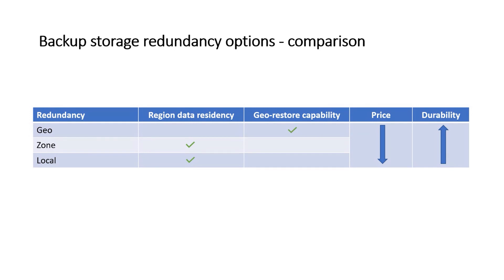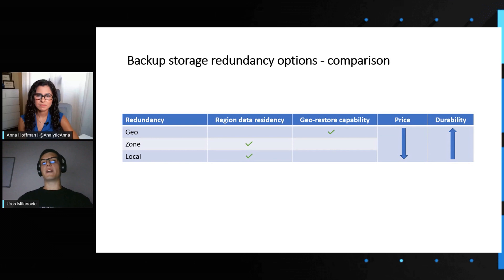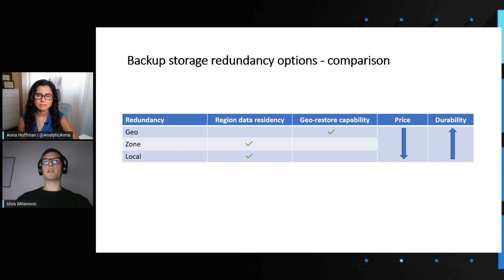If your business requires keeping data in the same region, then zone and local redundancy are the best fit, because data is replicated in the same region — either across availability zones or inside the same data center. With these two options, geo-restore capability is not possible, as it is specific to backup data that is replicated to another region. With geo-redundancy, customers get a cost-effective solution for disaster recovery. Pricing is also a consideration when deciding on backup storage redundancy, as it goes lower starting from geo down to local redundancy, which is a good opportunity for cost savings.